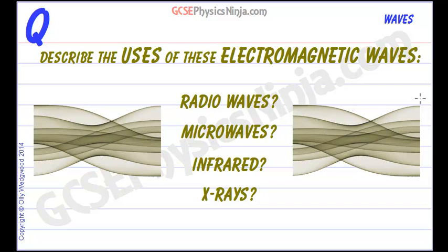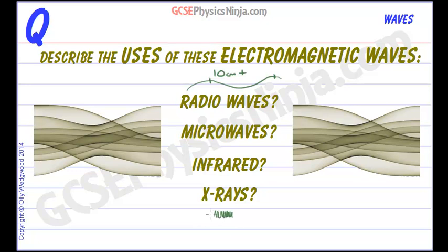Describe the uses of these electromagnetic waves. We'll go from radio waves all the way down to x-rays. Radio waves are the longest wavelength, going from 10 centimetres up to many kilometres in wavelength. X-rays are the smallest wavelength, with thousands of wavelengths in every millimetre — tiny wavelengths. They all travel at the same speed of light in a vacuum.